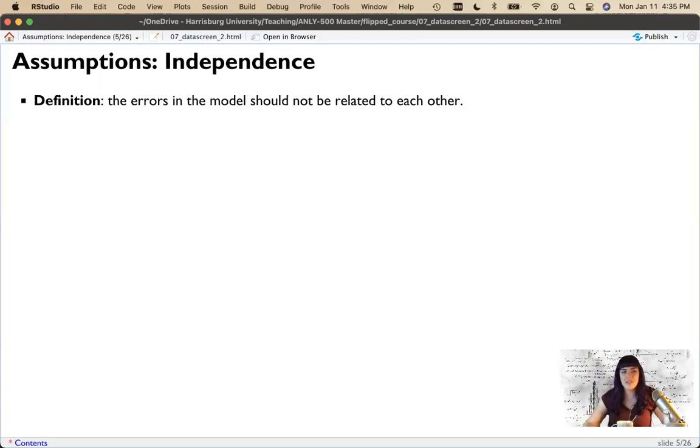For independence, the definition is that the errors in the model are unrelated. Sometimes you'll hear this described as identically and independently distributed or IID. It's this idea that my error is unrelated to your error.